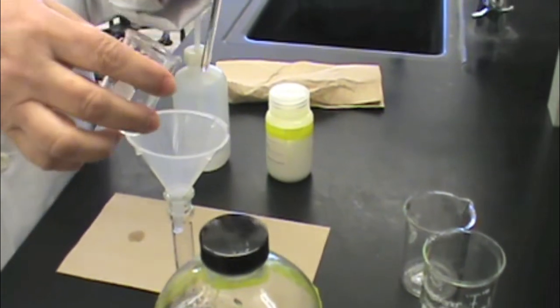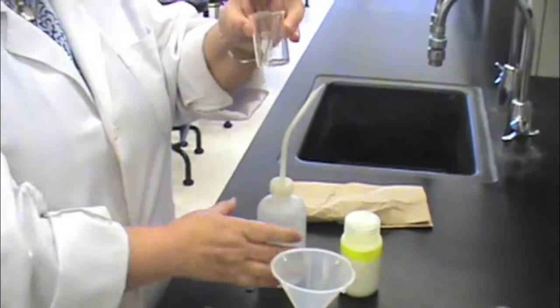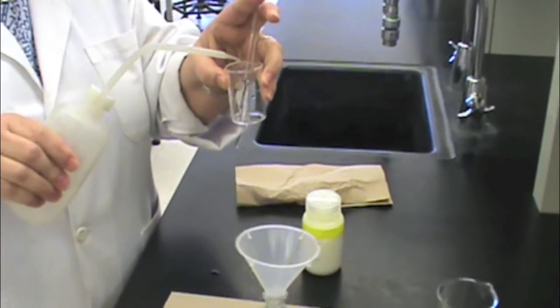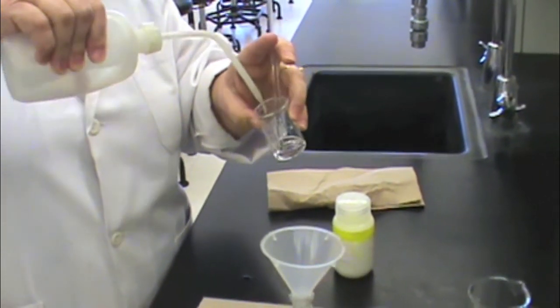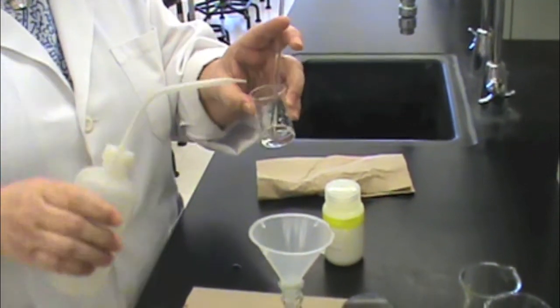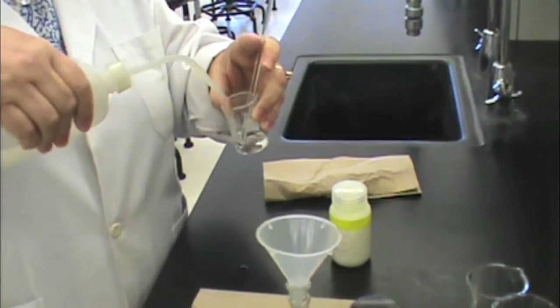Then put the glass stir rod back into the beaker and use your wash bottle to wash the stir rod and the beaker. You will need to rinse the beaker at least three times to make sure that all of your solution has been transferred to your volumetric flask.